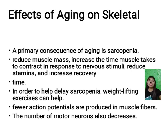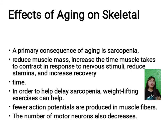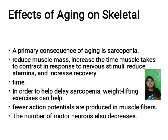Fast-twitch muscle fibers decrease in number more rapidly than slow-twitch muscle fibers, and most of the loss of strength and speed is due to this loss of fast-twitch muscle fibers. In addition, the surface area of the neuromuscular junction decreases, so action potentials in neurons stimulate action potentials in muscle fibers more slowly.